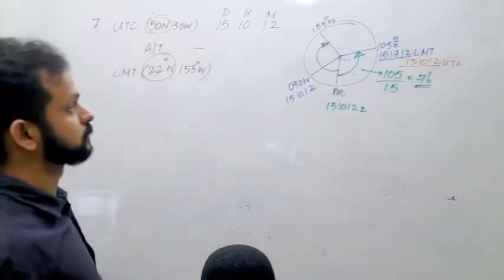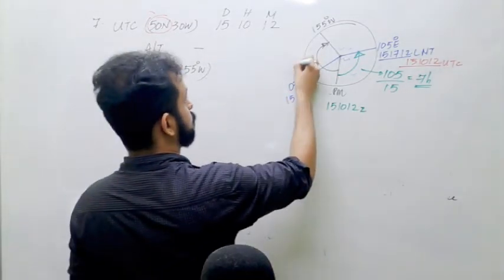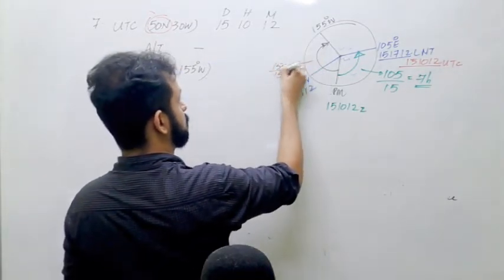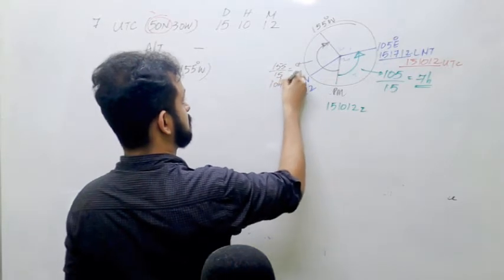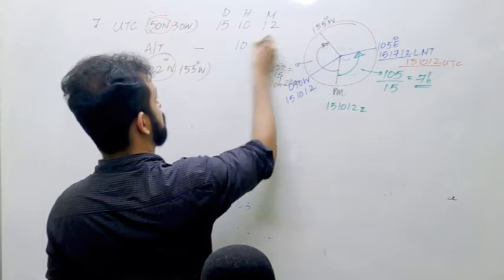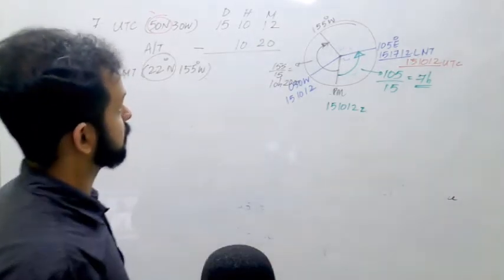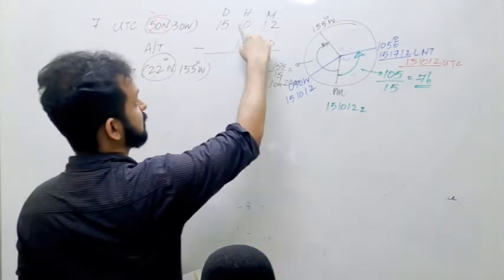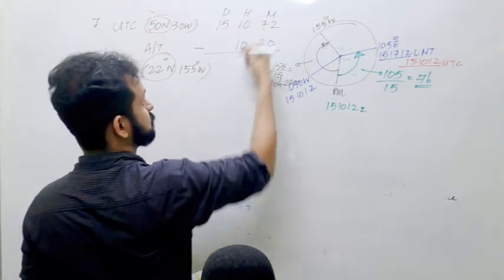It is 10 hours 20 minutes. 155 divided by 15. So you can see it is 10 hours 20 minutes. So we subtract. So how will you subtract this? You can take 60 from here. It becomes 72.